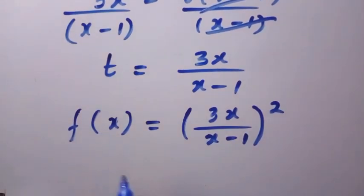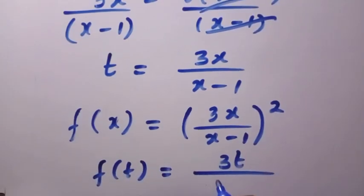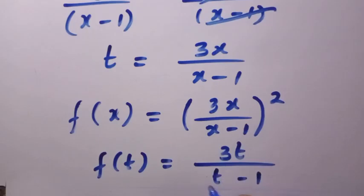3x divided by x minus 1 raised to the power of 2. Then, let's replace every single x with t. We have f of t equals 3t divided by t minus 1, then all raised to the power of 2. So, since we have obtained f of t,